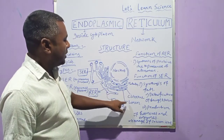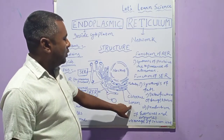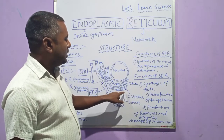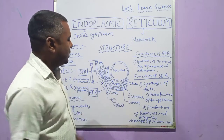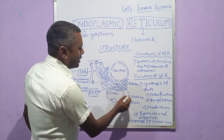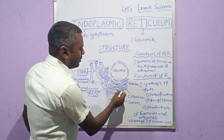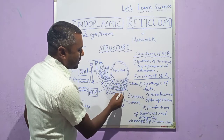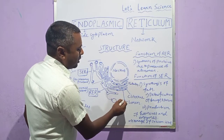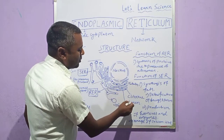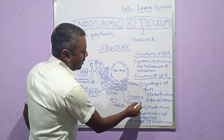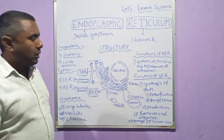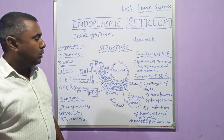Next, I have written about the lumen. Lumen means the cisternal space. This is the cisternal space — you can see some gap space in there. This gap space is called cisternal space, or what we call the lumen.